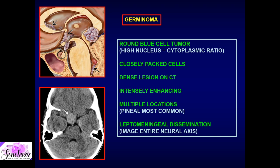This tumor is also called dysgerminoma or extragonadal seminoma. Like other primitive cell line tumors, it is predominantly midline and occurs in mid-pediatric patients. Typical locations are the pineal gland region, inferior third ventricular region, or suprasellar region — classic being the pineal gland. It appears as a lobulated soft tissue mass engulfing the pineal gland, with a central chunky calcification — distinguishing it from pineal gland neoplasms like pineocytoma or pineoblastoma, which show burst calcification.